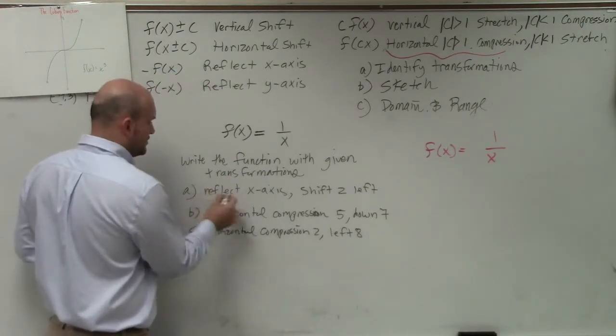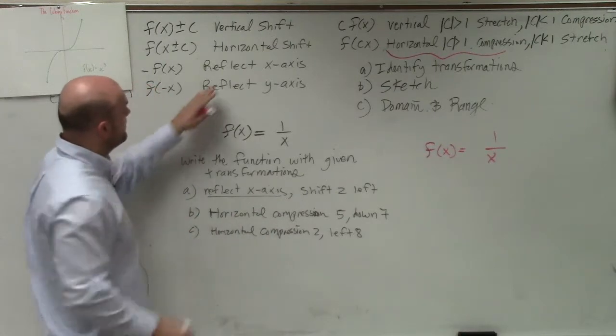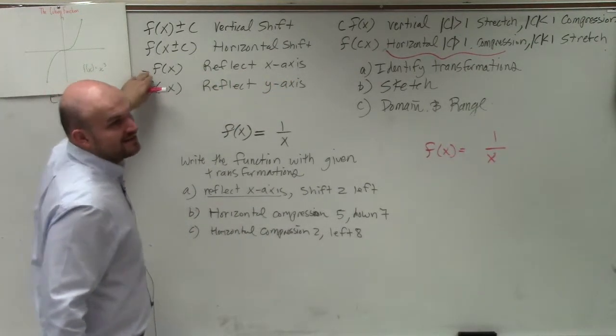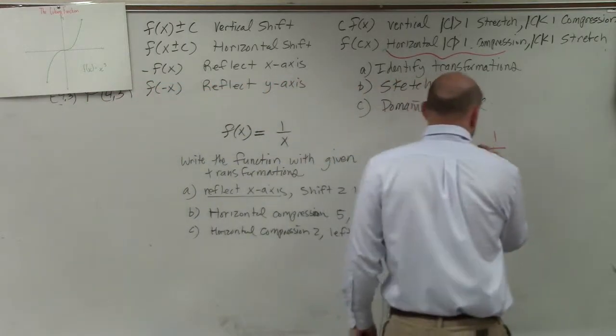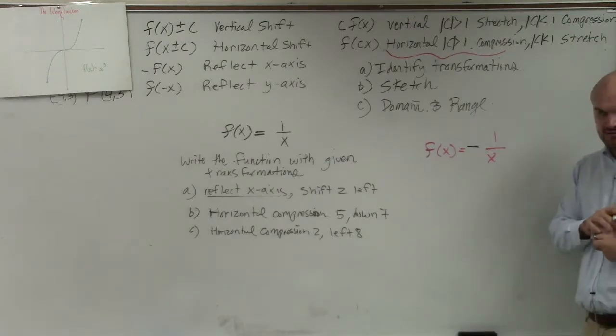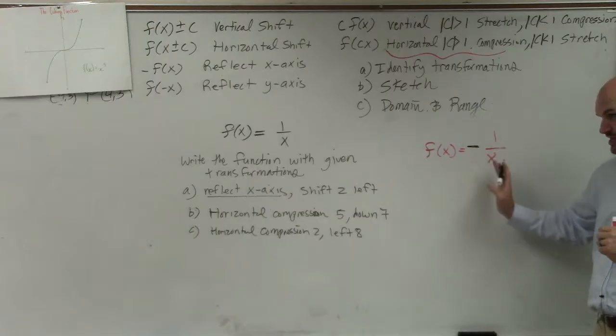So the first one I'm going to do is reflecting across the x-axis. Reflecting across the x-axis means I need to multiply by a negative outside the function. So I'm not going to change my function, I'm just going to multiply by a negative on the outside. Does everybody agree with me that's multiplied by the outside? My function has not been changed.